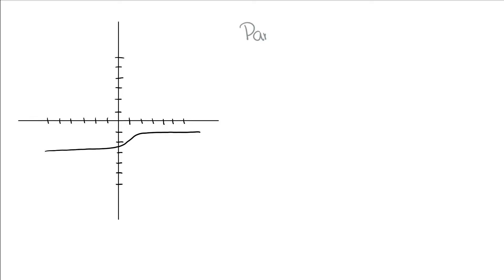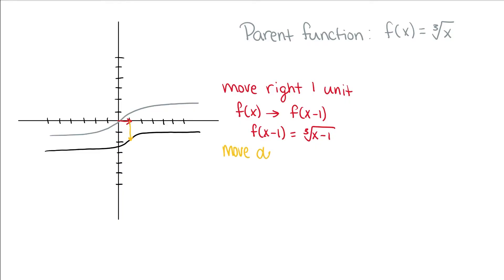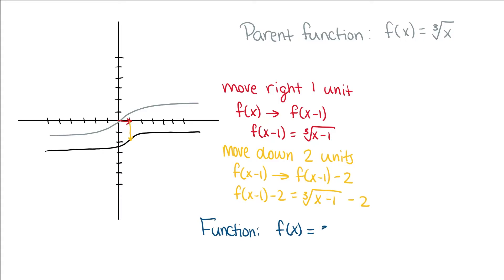Last, we have another shape. Our parent function is f(x) = ∛x, the cube root of x. This function was moved right one unit, so we did f(x - 1) — when we move right, we subtract. And then it was moved down two units, so we subtract 2 from the entire function. Our transformed function becomes f(x) = ∛(x - 1) - 2.